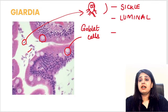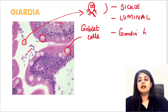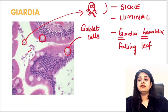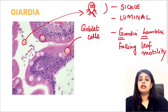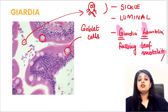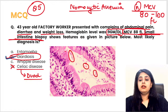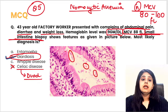Giardia lamblia is present in the lumen — it is a luminal organism. Its motility is falling leaf motility, remembered as 'girtha hua leaf.' Do not confuse this with twitching motility, which belongs to Trichomonas — 'T for T.' So falling leaf motility equals Giardia, twitching motility equals Trichomonas.